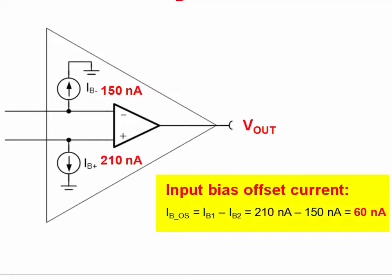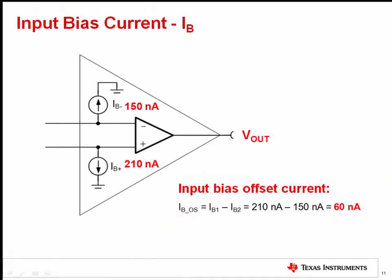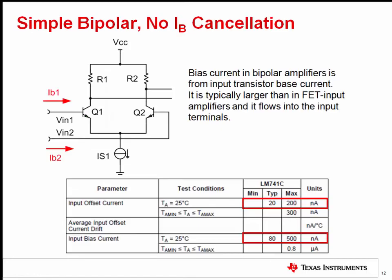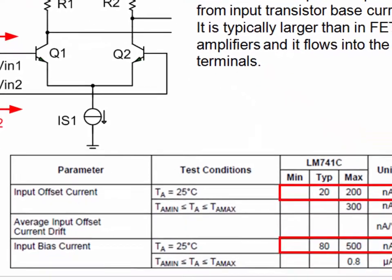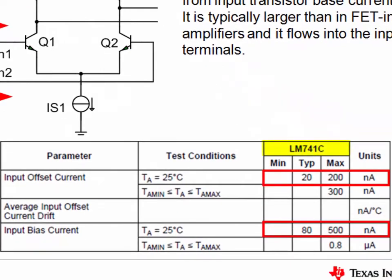If the input offset current is low, it's possible to match the impedances connected to each input and cancel the offset developed from the input bias currents. In a bipolar amplifier, input bias current is the current flowing into the base of each transistor in the input pair. Generally, the bias current for bipolar amplifiers is larger than the bias current for MOSFET and JFET amplifiers. Typical numbers are in the range of nanoamps. In the case of the LM741C, the input offset current is about 200 nanoamps max, and the input bias current is about 500 nanoamps max.